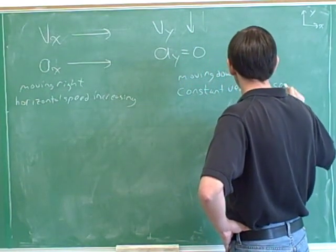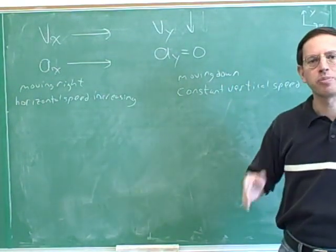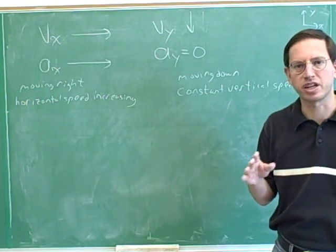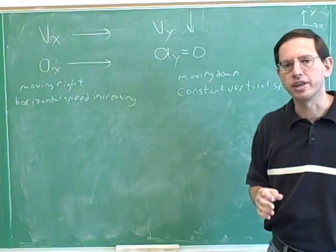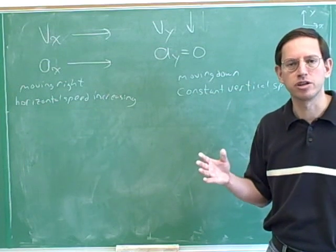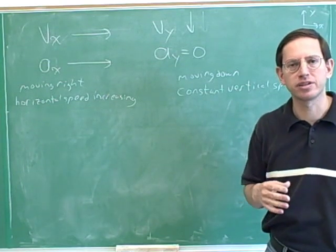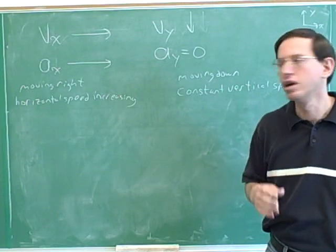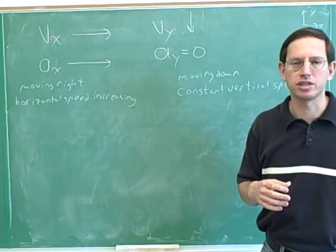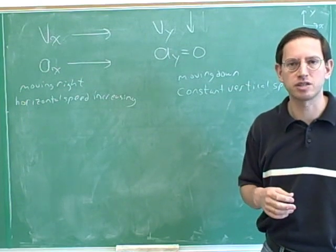Constant vertical speed. This is very important to understand — not just for kinematics, but for the whole course. When the acceleration is parallel to the velocity, you're speeding up. When the acceleration is anti-parallel to the velocity, you're slowing down. So if the acceleration is zero, you must be neither speeding up nor slowing down. When the acceleration is zero, you must be going at constant speed.